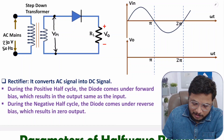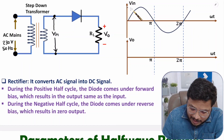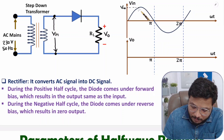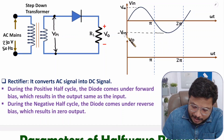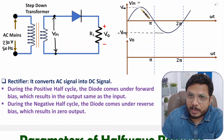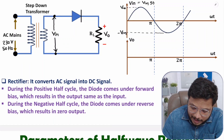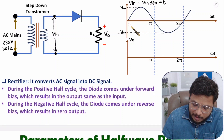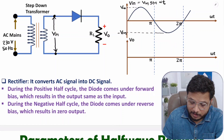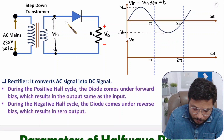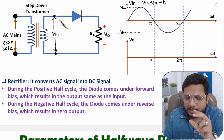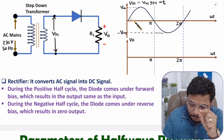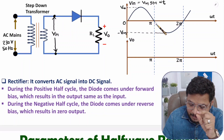VIN is a sinusoidal signal with maximum voltage Vm, and we can express it as VIN = Vm sin(ωt). To understand the working, we bisect it into two parts: the positive half cycle from zero to π, and the negative half cycle from π to 2π.